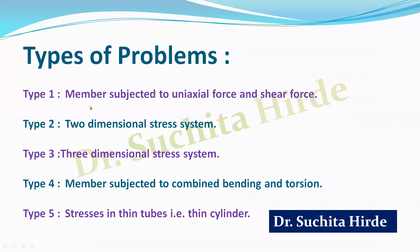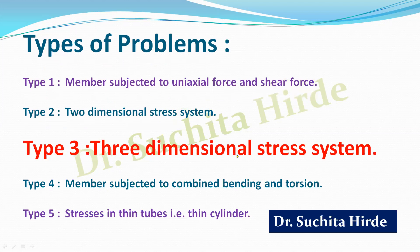There are 5 types of problems: a member subjected to uniaxial force and shear force; a 2-dimensional stress system; a 3-dimensional stress system; a member subjected to combined bending and torsion; and stresses in thin tubes, that is, thin cylinders. In the previous video, you learned about a member subjected to uniaxial force and shear force — one numerical example on type 1 was solved. In this video, we will solve one example on a 3-dimensional stress system.